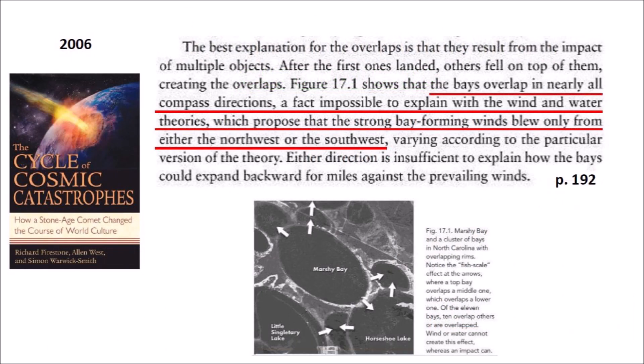The 2006 book by Richard Firestone, Alan West, and Simon Warwick-Smith said that the best explanation for the overlaps of the Carolina Bays is that they result from the impact of multiple objects. After the first ones landed, others fell on top of them, creating the overlaps. Figure 17.1 shows that the bays overlap in nearly all compass directions, a fact impossible to explain with wind and water theories which propose that the strong bay-forming winds blew only from either the northwest or the southwest, varying according to the particular version of the theory. Either direction isn't sufficient to explain how the bays could expand backwards for miles against the prevailing winds.